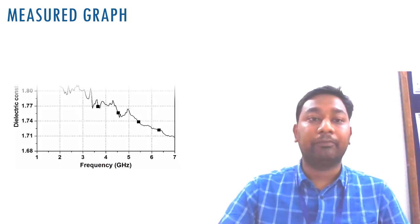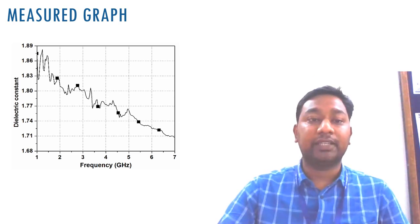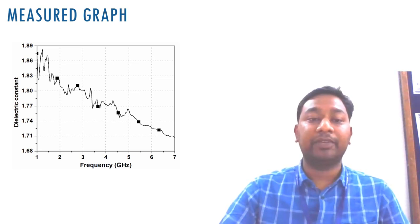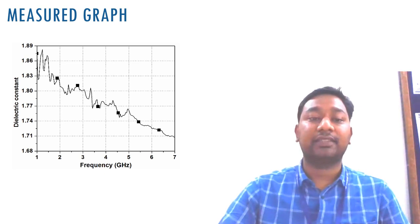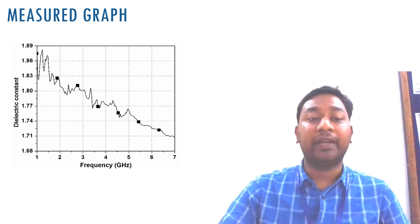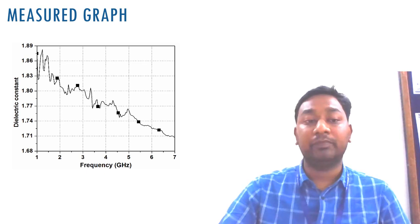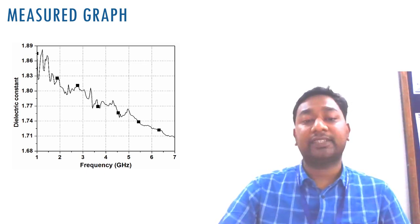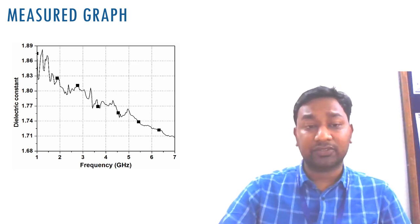After characterization, we measure the substrate using vector network analyzer software by computing the dielectric constant. We measured a jeans substrate in the frequency range of 1 to 7 GHz and found that the value of dielectric permittivity is near 1.7 in the 3 to 4 GHz region, and at 2.4 GHz the dielectric constant is near 1.8. Every jeans substrate may use different material proportions, so the dielectric constant may differ. Before designing the antenna, we must first measure the dielectric constant.